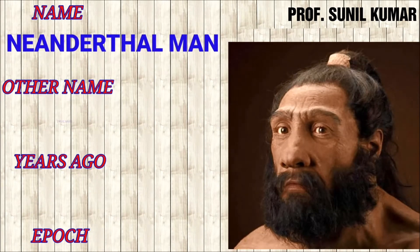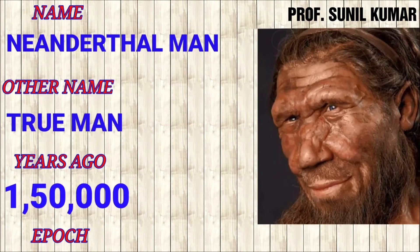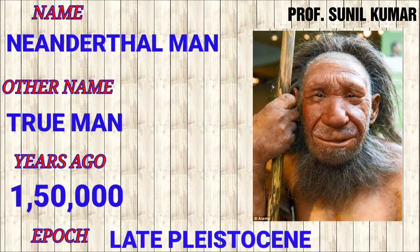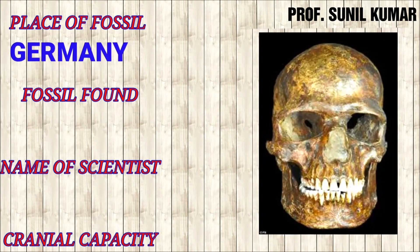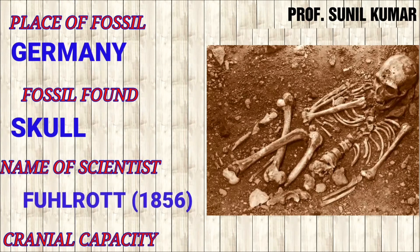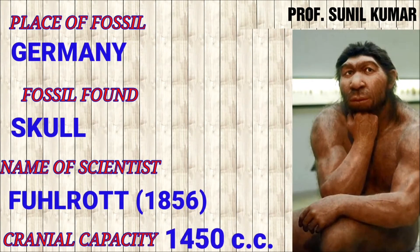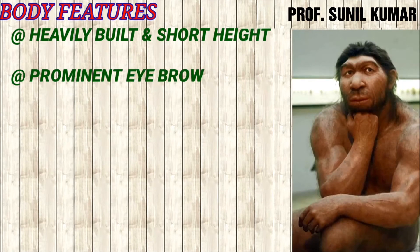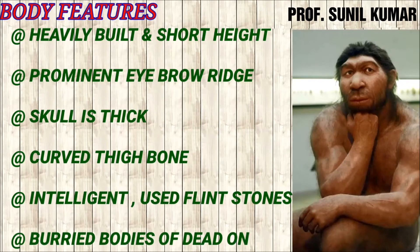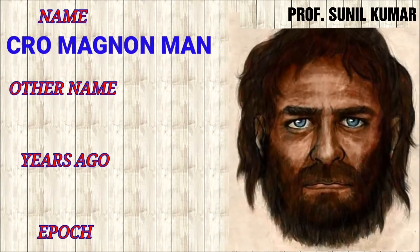Next is Neanderthal man, also called true men, having all the features of modern humans. They lived 150,000 years ago in the late Pleistocene epoch. The fossil was first obtained in Germany, and the skull was the fossil found. Fuhlrott in 1856 described Neanderthal man. Cranial capacity was approximately that of modern man. Body was heavily built, short height, prominent eyebrow ridge, thick skull, and curved thigh bone. They were intelligent, started using flint stones, and buried their dead — showing human behavior.